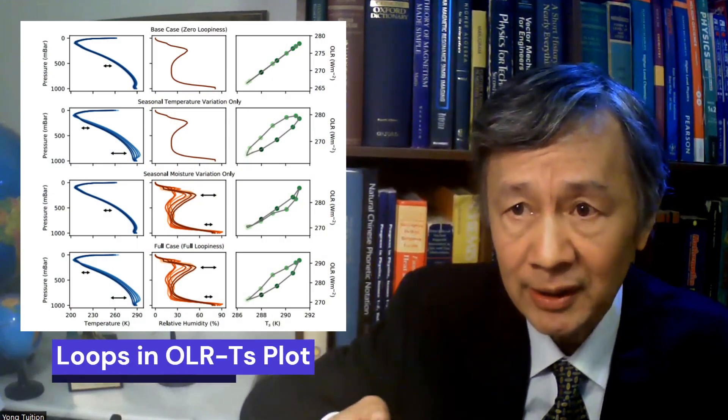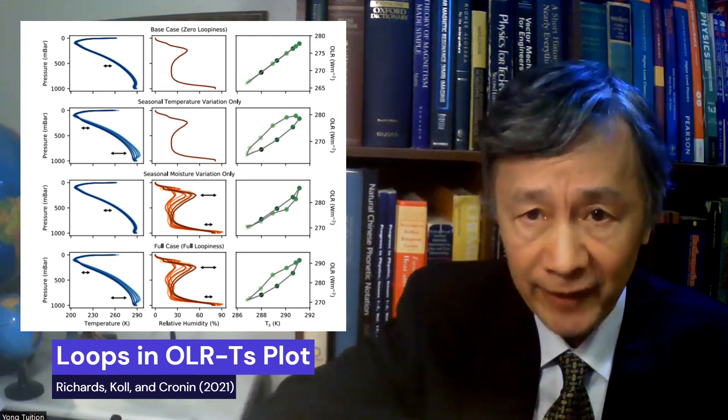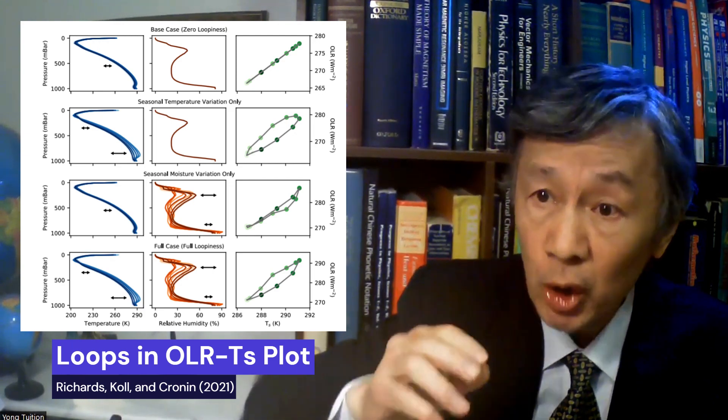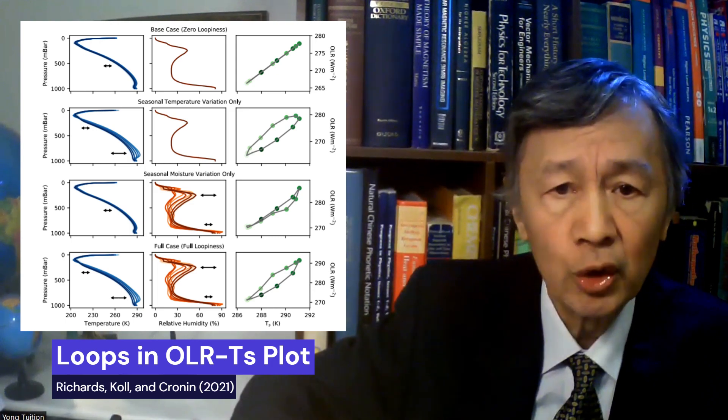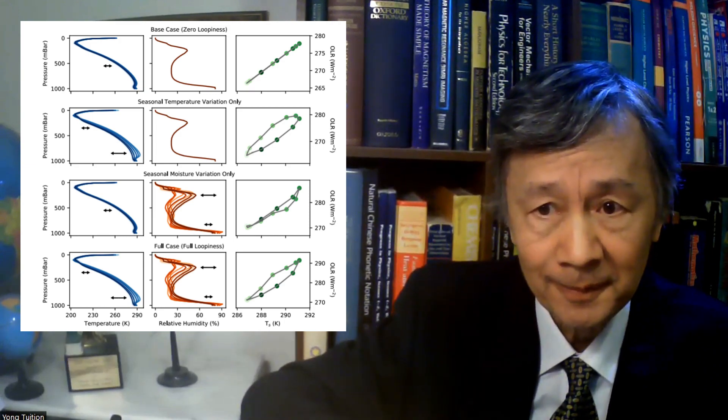Based on their radiative transfer calculations, they have shown that in the tropics, OLR loops could be caused by seasonal variations in relative humidity that are out-of-phase with the surface temperature, while in the actual tropics, OLR loops are mainly due to variations in lapse rates. Nevertheless, no analytical formula could be found.